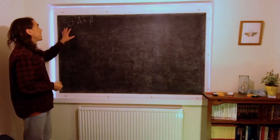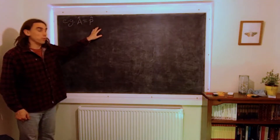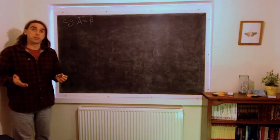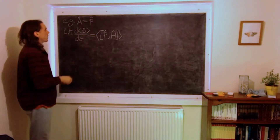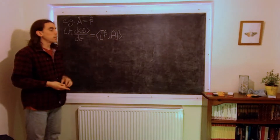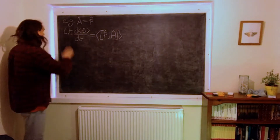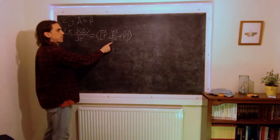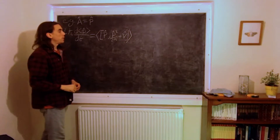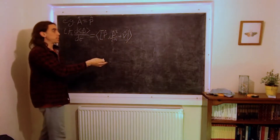Let's take another example where the operator A is equal to the momentum operator. In that case, what we need to evaluate is the commutator of the momentum with the Hamiltonian. We can expand the Hamiltonian just as before into the kinetic plus the potential parts. The kinetic part will commute — p always commutes with p² — and we need to evaluate the commutator of p with the potential.